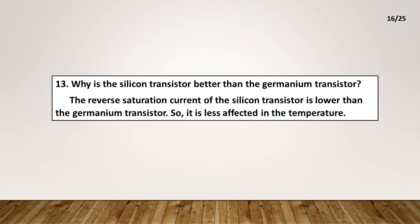Why is the silicon transistor better than the germanium transistor? The reverse saturation current of the silicon transistor is lower than the germanium transistor.